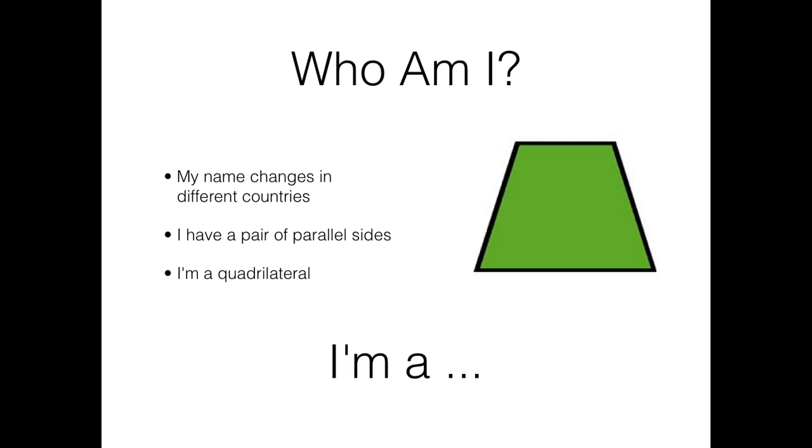Who am I? My name changes in different countries. I have a pair of parallel sides. This line and this line are parallel. That means they never meet. I'm also a quadrilateral. Quad means four. Lateral means sides. So I have four sides. I'm a Trapezium.